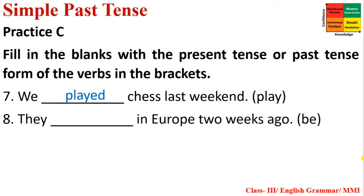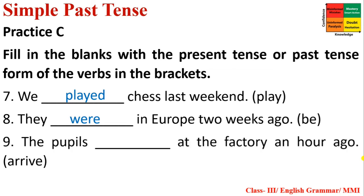Number eight: 'They were in Europe two weeks ago.' 'Ago' signals Simple Past Tense. Past form of 'be' — after 'they' (third person plural) we use 'were.' Number nine: 'The pupils arrived at the factory an hour ago.' 'Ago' again signals Simple Past Tense. 'Arrived' is the correct past form.